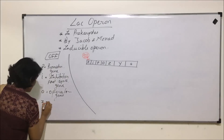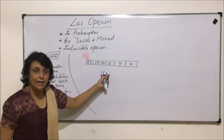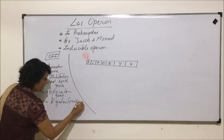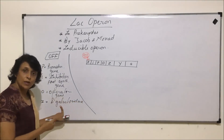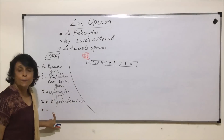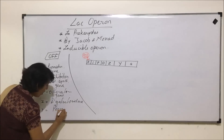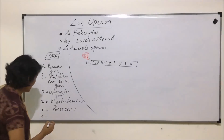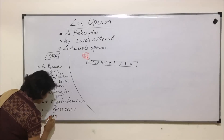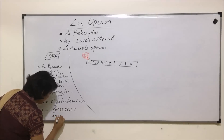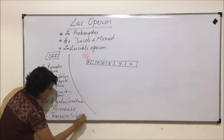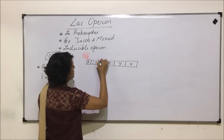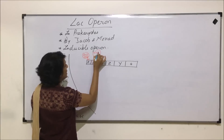In lac operon there are three structural genes and they are written as Z, Y, and A. Z is going to transcribe and translate into beta-galactosidase. Y is going to help in synthesis of another enzyme called permease. And A will transcribe and translate to form a third enzyme called transacetylase. These three are the structural genes, and to the promoter gene our RNA polymerase is attached.